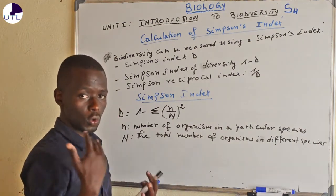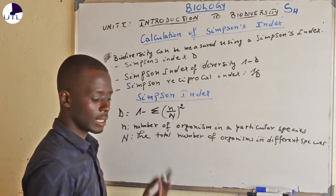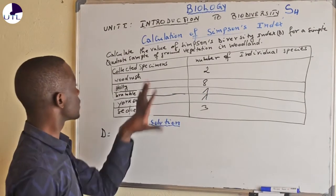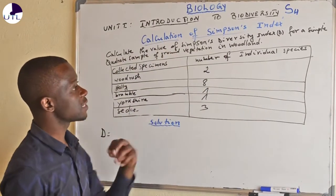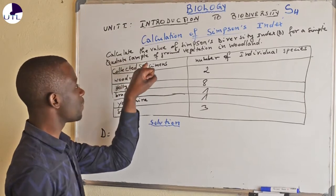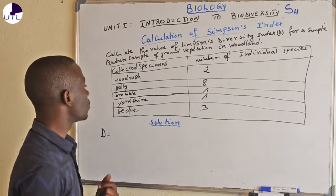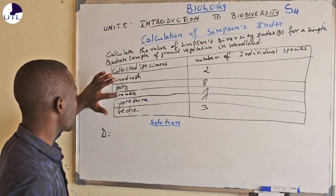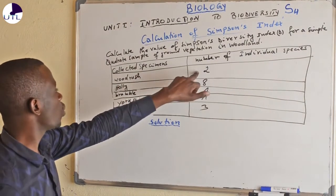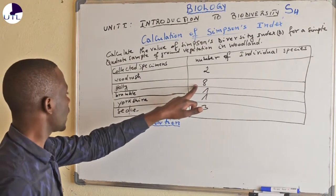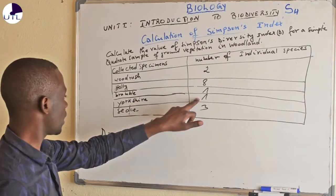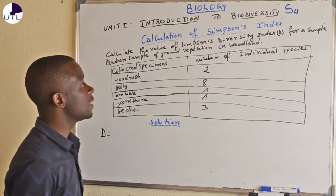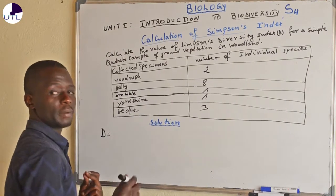We are now going to do one exercise about this and see how this formula is calculated. You will calculate the value of Simpson's Diversity Index for a sample of ground vegetation in a certain woodland. The specimens collected are Woodrushes, Horry, Bramble, Yorkshire, and Sedge. We have collected 2 Woodrushes, 8 Horry, 1 Bramble, 1 Yorkshire, and 3 Sedges.